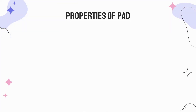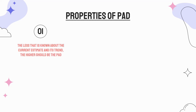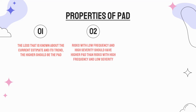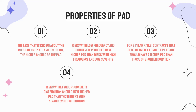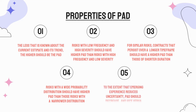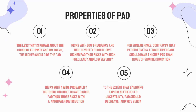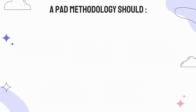Some properties of provision for adverse deviation are as follows: the less that is known about the current estimate and its trend, the higher should be the provision for adverse deviation. Risks with low frequency and high severity should have higher provision for adverse deviation than risks with high frequency and low severity. Contracts that persist over a longer time frame should have higher provision for adverse deviation, and risks with a wide probability distribution should have higher provision for adverse deviation. To the extent that emerging experience reduces uncertainty, provision for adverse deviation should decrease, and vice versa.